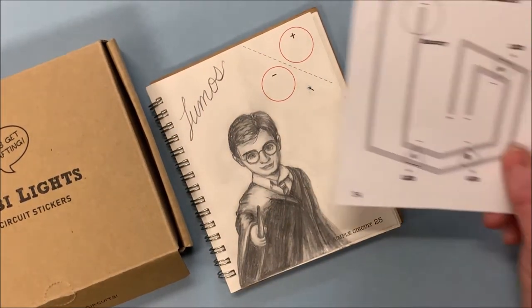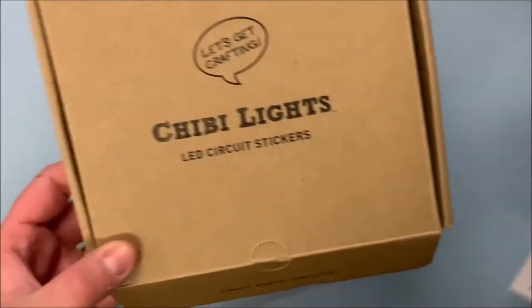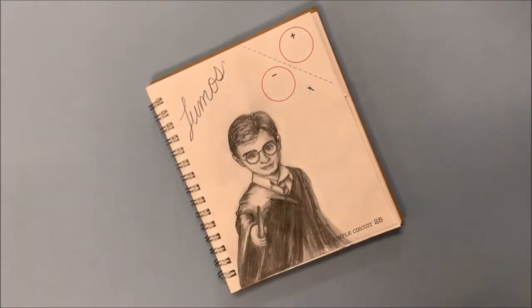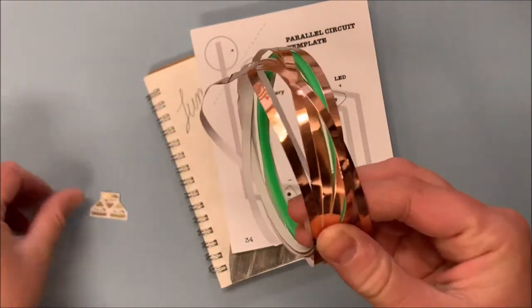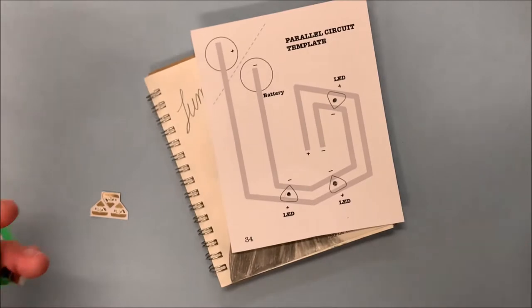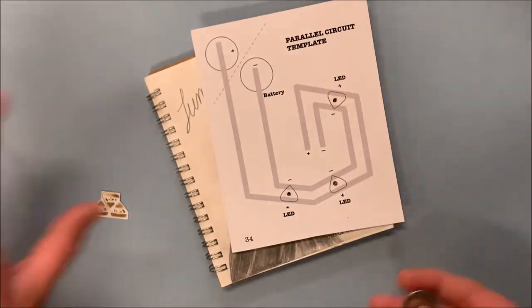Hey guys, today we're going to be making a project using Chibitronics lights, which are LED stickers. You use a template, these little LED stickers, some copper foil tape, and a coin cell battery.